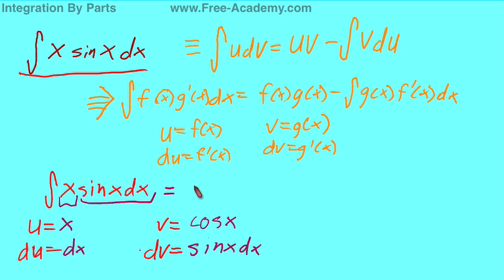Now we put everything into our formula. uv equals x cosine of x. And I just noticed I made a little mistake. Our v is actually negative cosine of x. So our uv equals negative x cosine of x. Sorry about that. Now, the second part, minus the integral of v, negative cosine of x, du, which in this case just happens to be dx.